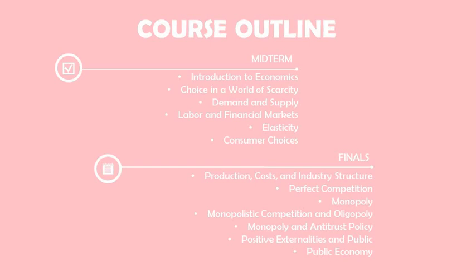Lesson 9 covers Monopoly — distinguishing between natural and legal monopolies, and explaining how economies of scale and control of natural resources lead to the formation of legal monopolies. Lesson 10 covers Monopolistic Competition and Oligopoly — how monopolistically competitive firms choose prices and quantity, and how advertising can impact monopolistic competition.